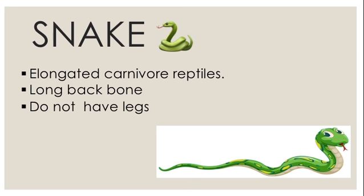Carnivore means eating other animals — they eat the flesh of other animals. Snakes eat both big and small animals, and some large snakes are big enough to eat a human being.